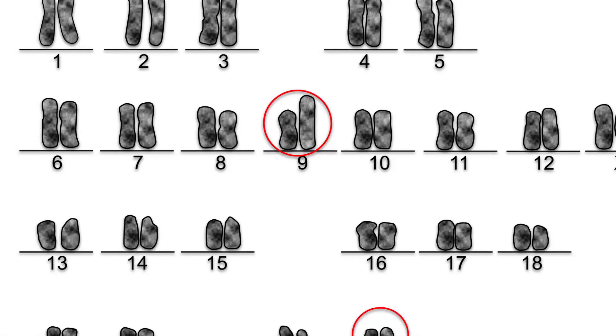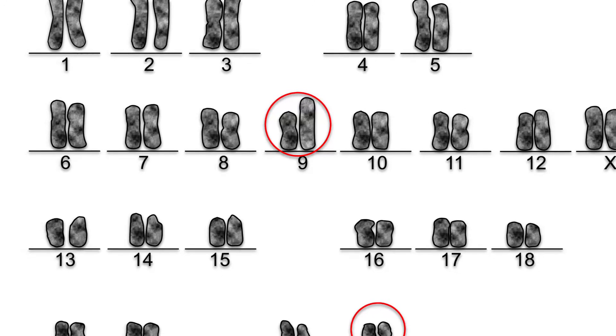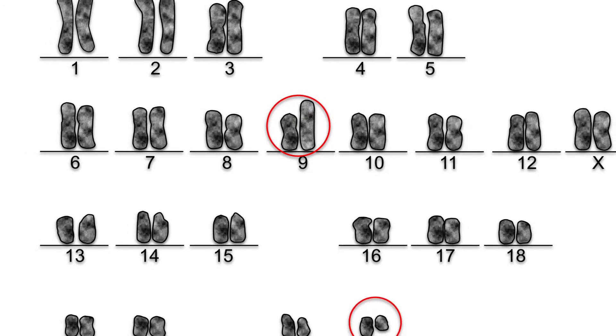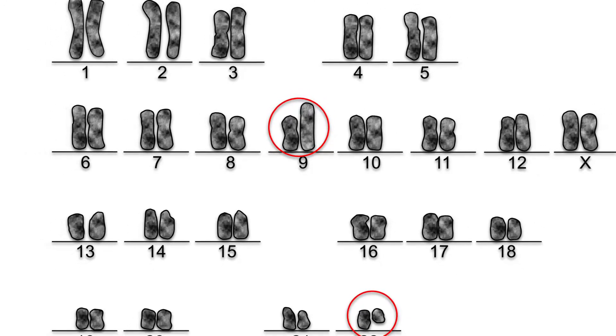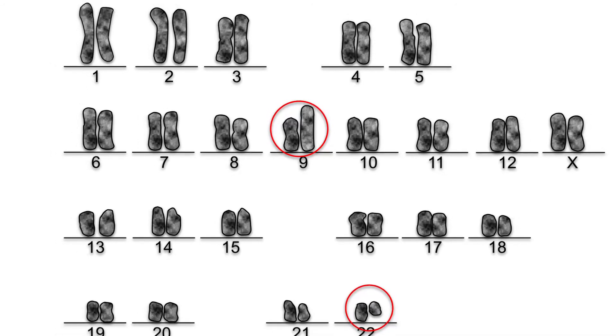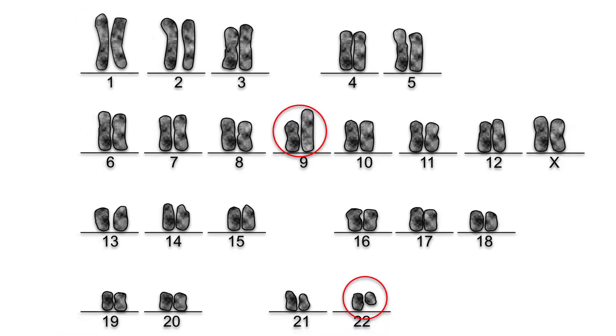What came to be called the Philadelphia chromosome, which is found in more than 90 percent of all CML patients, was the first genetic mutation directly linked to human cancer to be pinpointed and defined.